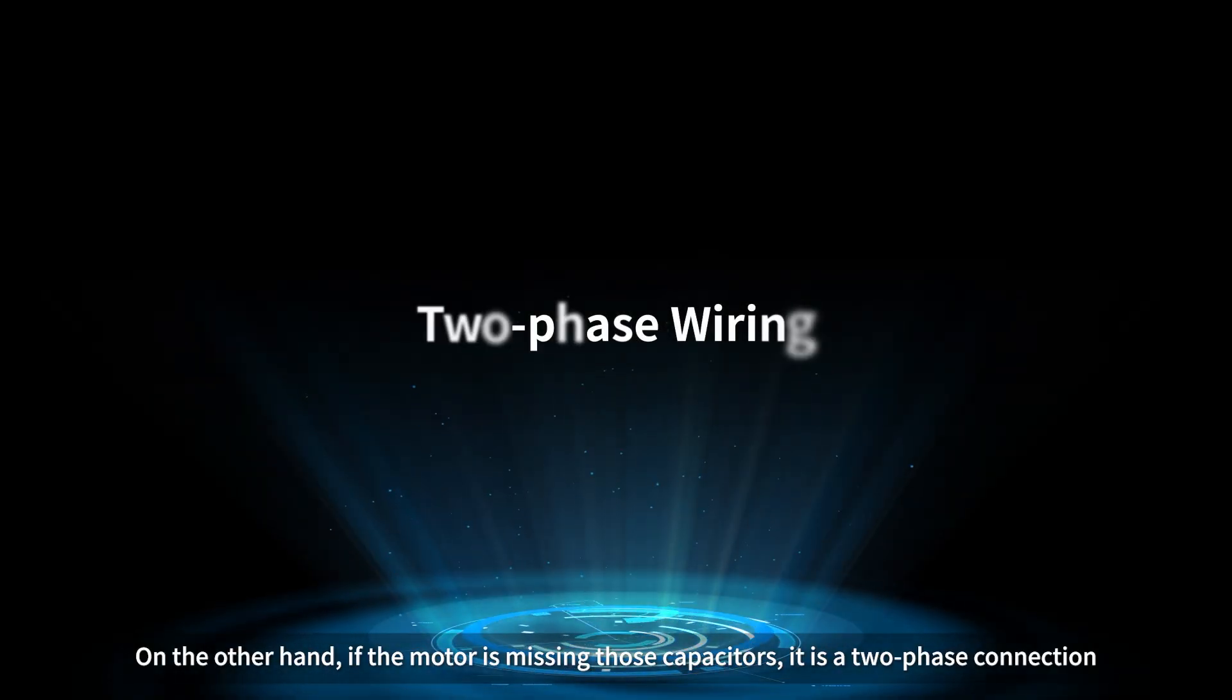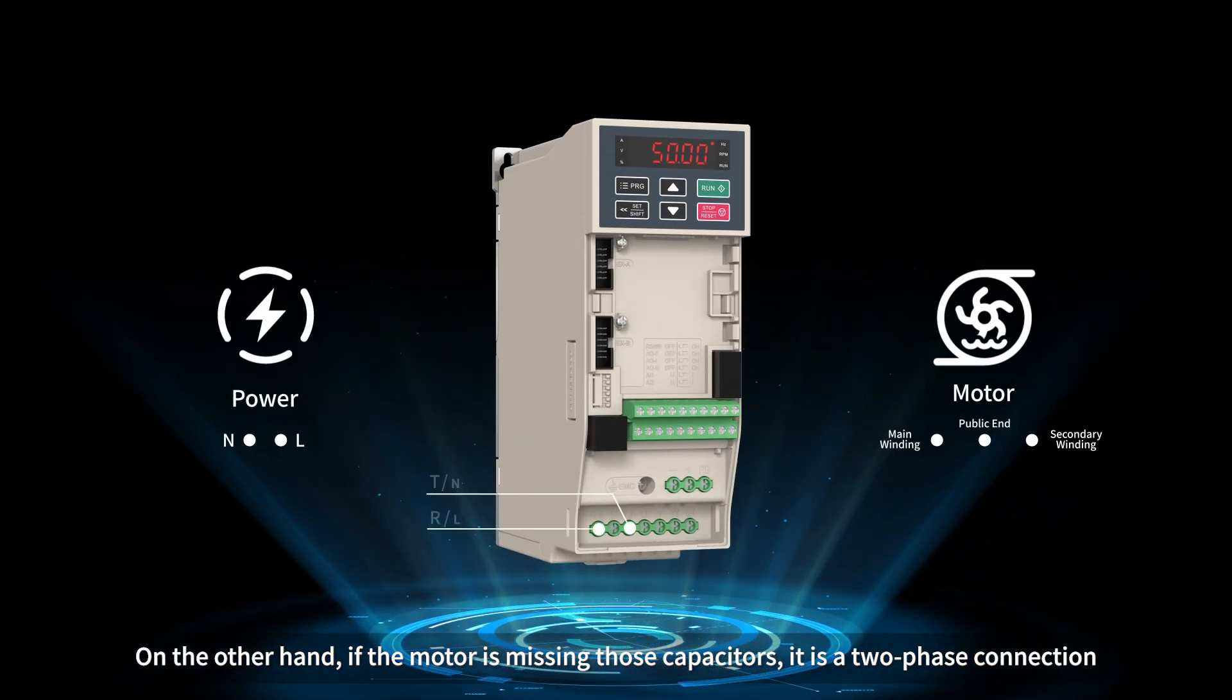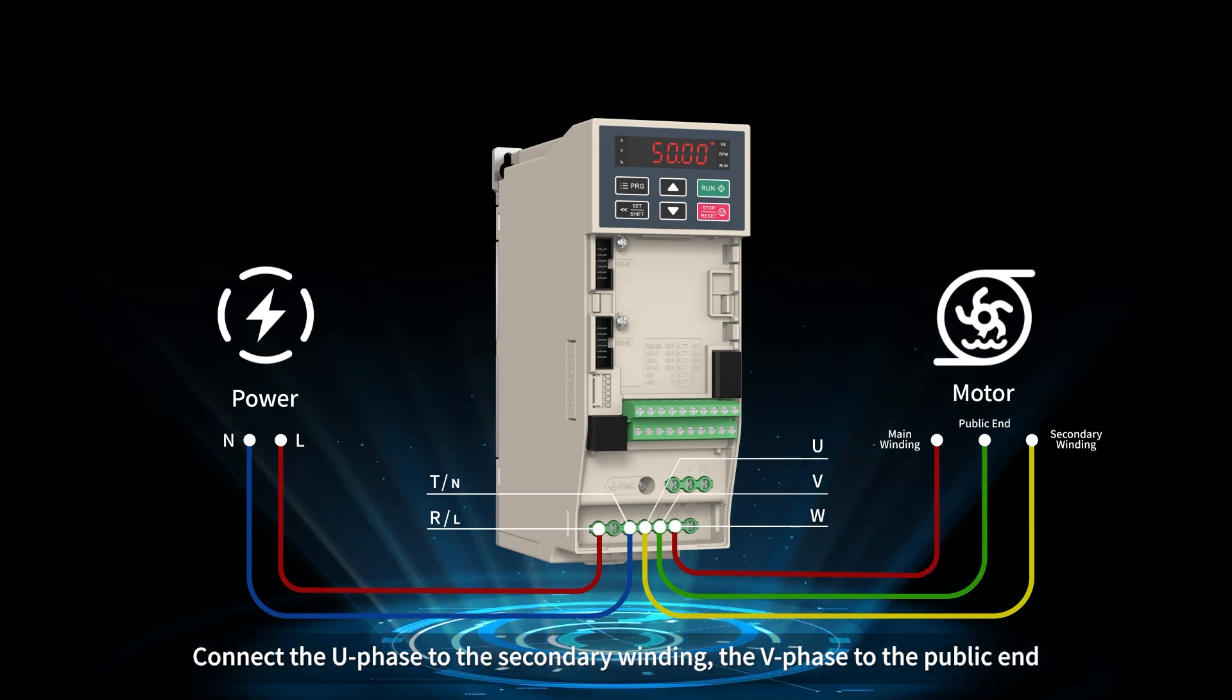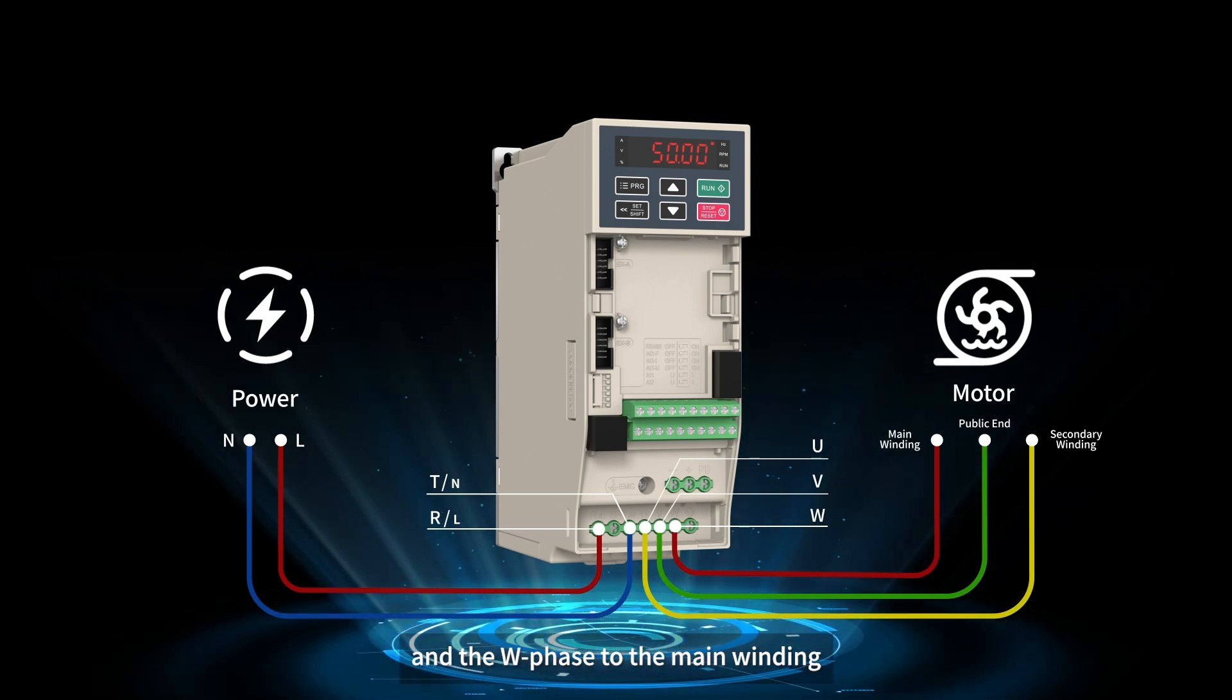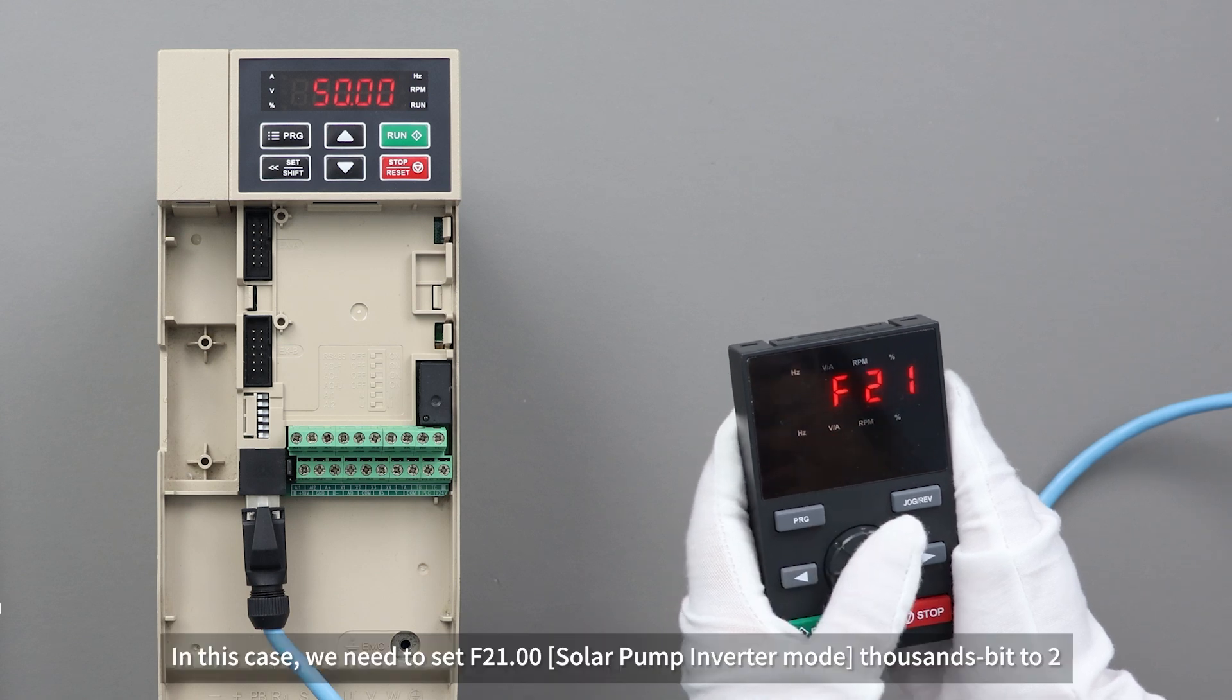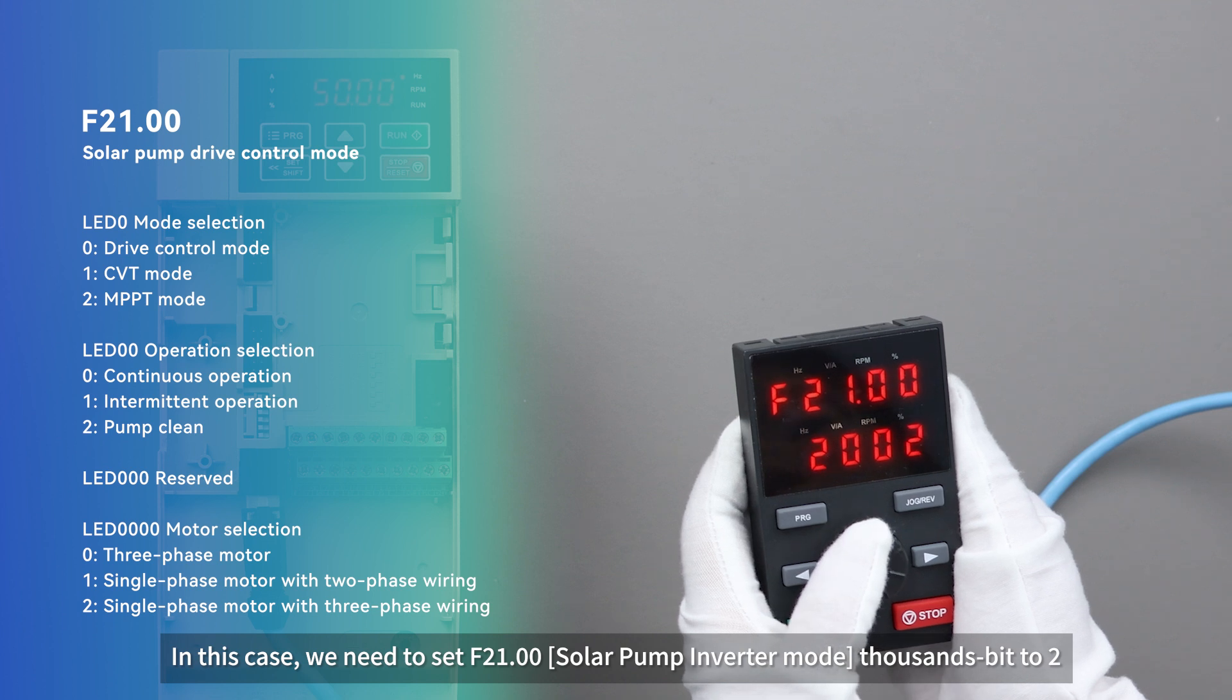On the other hand, if the motor is missing those capacitors, it is a two-phase connection. Connect the U phase to the secondary winding, the V phase to the public end, and the W phase to the main winding. In this case, we need to set F21.00 thousands bit to 2.